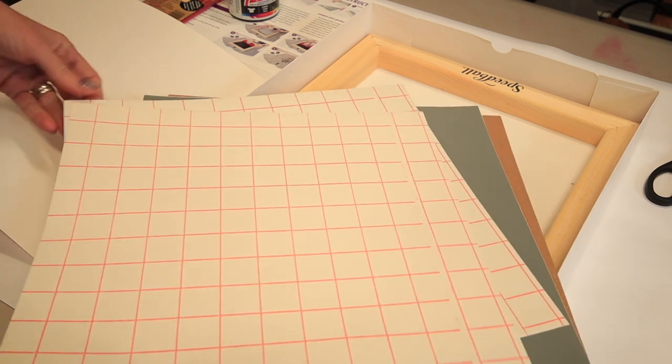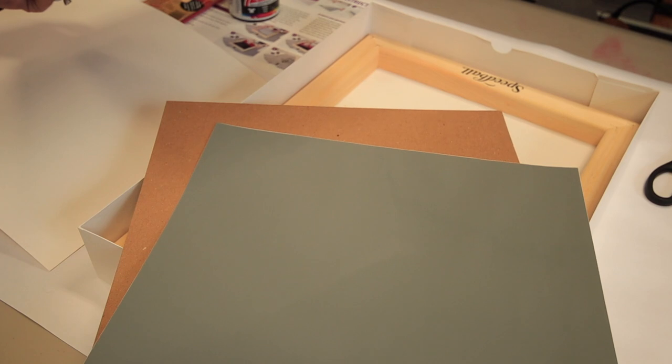Then we have our transfer paper. So they give you a couple sheets of the transfer paper. And then we have our vinyl paper. So what we'll do is use the Cricut machine to cut out the vinyl.